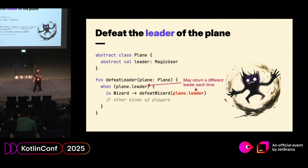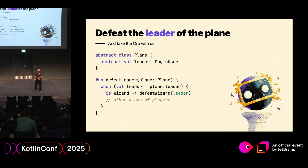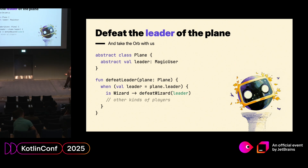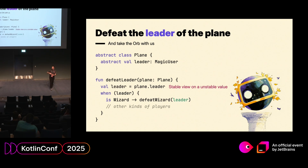The solution in this case is simple. We were bringing the leader every time from the plane — we'll just keep it in a local variable and then it's stable. We put it in a val and then we are only reading it once, stabilizing a value that was unstable before. Using a val gives you a stable view on this unstable value.